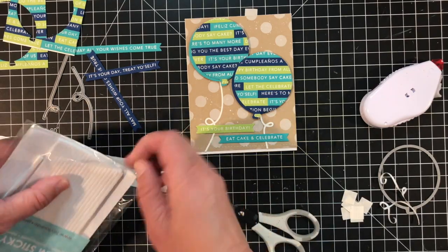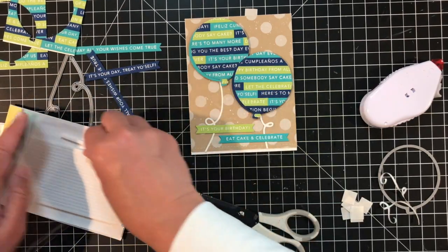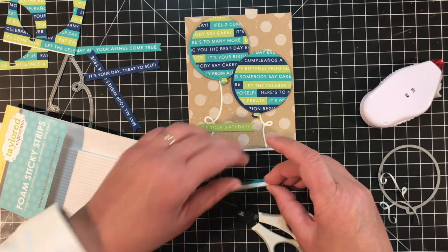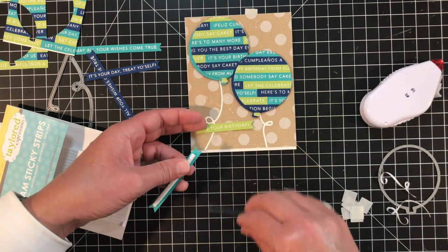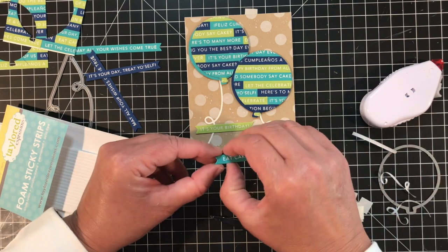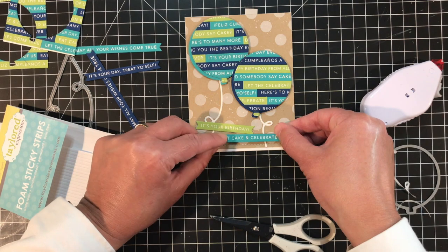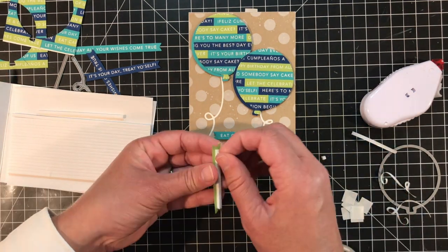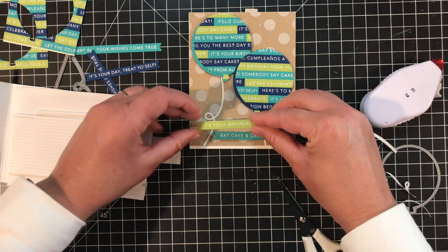Finally I'm adding a few of the sentiments from the simple strips birthday set. This is the strips that I left the notches on the ends. I'll pop those up using foam sticky strips and attach those right across the bottom of the card. I hope you liked this fun idea on a different way to use your simple strips and pairing it with a die cut to create some unique die cut shapes for your next project.